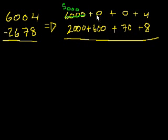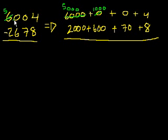Let's put that 1,000 in the hundreds place, so we'll have 1,000 here. We'll have 5,000 left, and now we're going to have 10 hundreds. 10 hundreds is the same thing as 1,000. So now these two columns look all right.